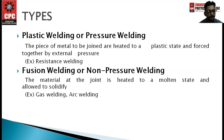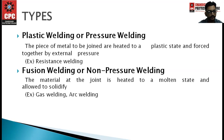We have two types in the welding process: plastic welding or pressure welding, and second is fusion welding or non-pressure welding. In plastic welding we have resistance welding mainly, and in fusion welding we have gas welding and arc welding.